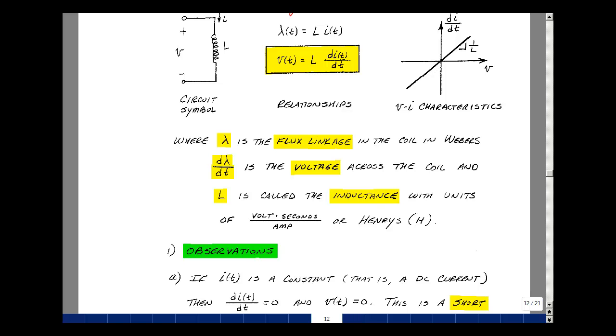We can also make another observation. If we have an abrupt change in current as you go from one level to another, you have an infinite slope. That means you would have to have an infinite voltage if you were able to change the current instantaneously in a coil. Of course that's not possible so the current through an inductance cannot change instantaneously.